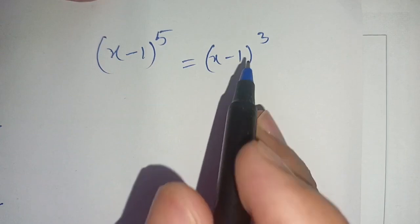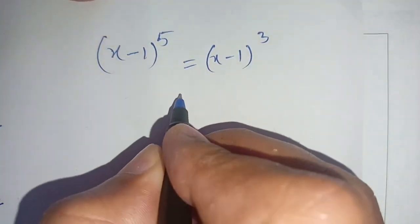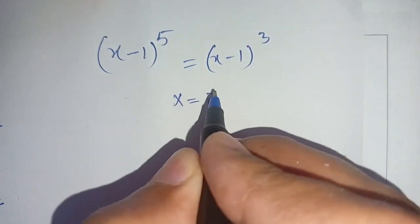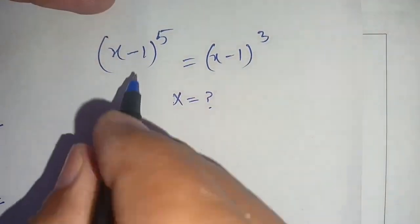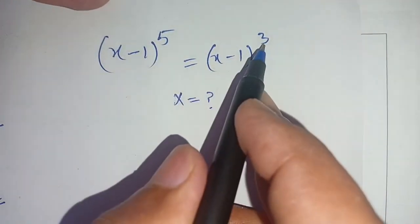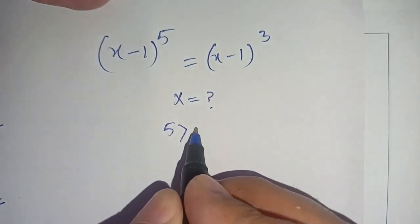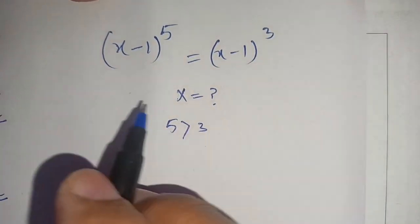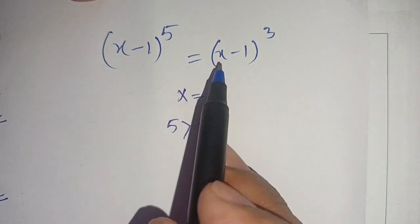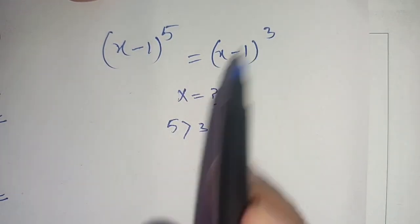Now our next problem is: (x - 1) raised to power 5 is equal to (x - 1) raised to power 3, and we have to find the value of x which satisfies this equation. Here the power is 5 and here the power is 3, and since 5 is greater than 3, we divide both sides by (x - 1) raised to power 3.